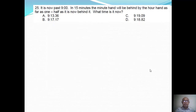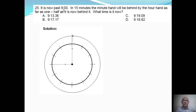Next problem: it is now past 9 o'clock. In 15 minutes, the minute hand will be behind the hour hand by as far as one half as it is now behind it. What time is it now? So the stated initial time here is 9 o'clock, and past 9 o'clock, let us say this is the time. The minute hand is behind the hour hand by a number of minutes.